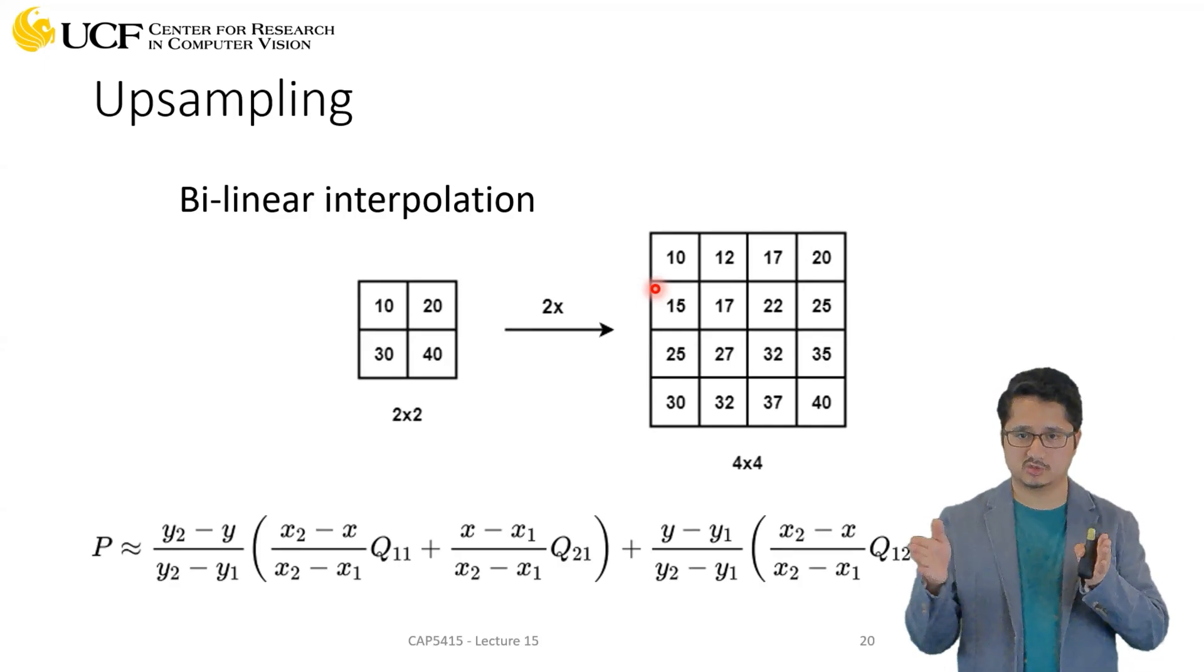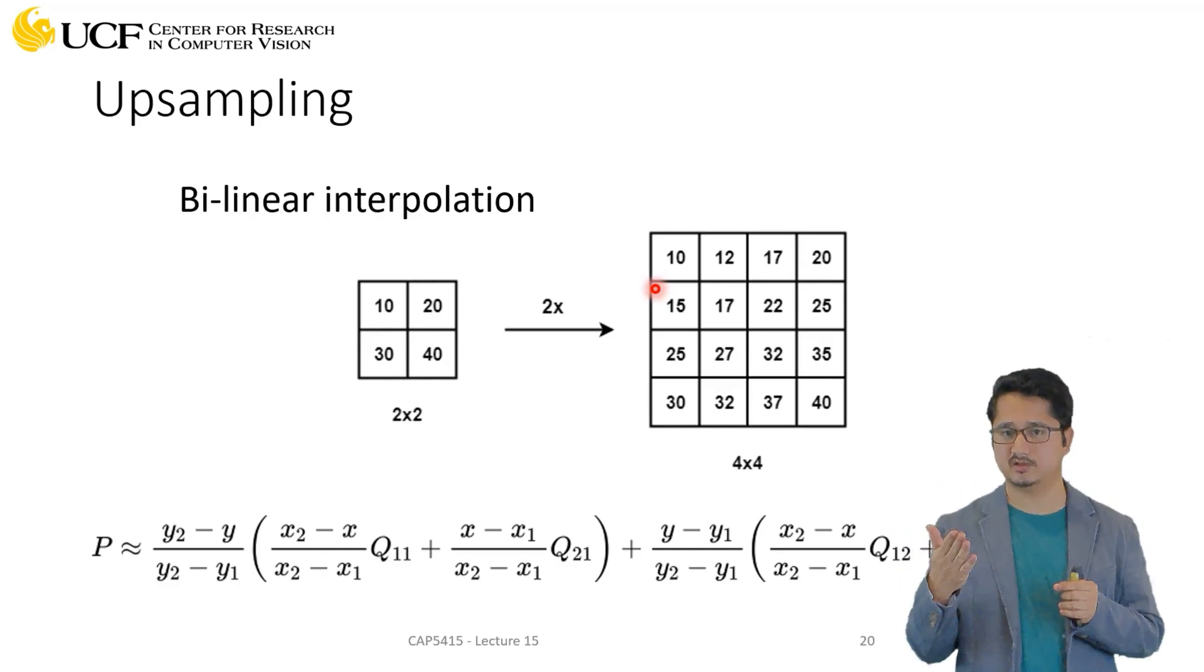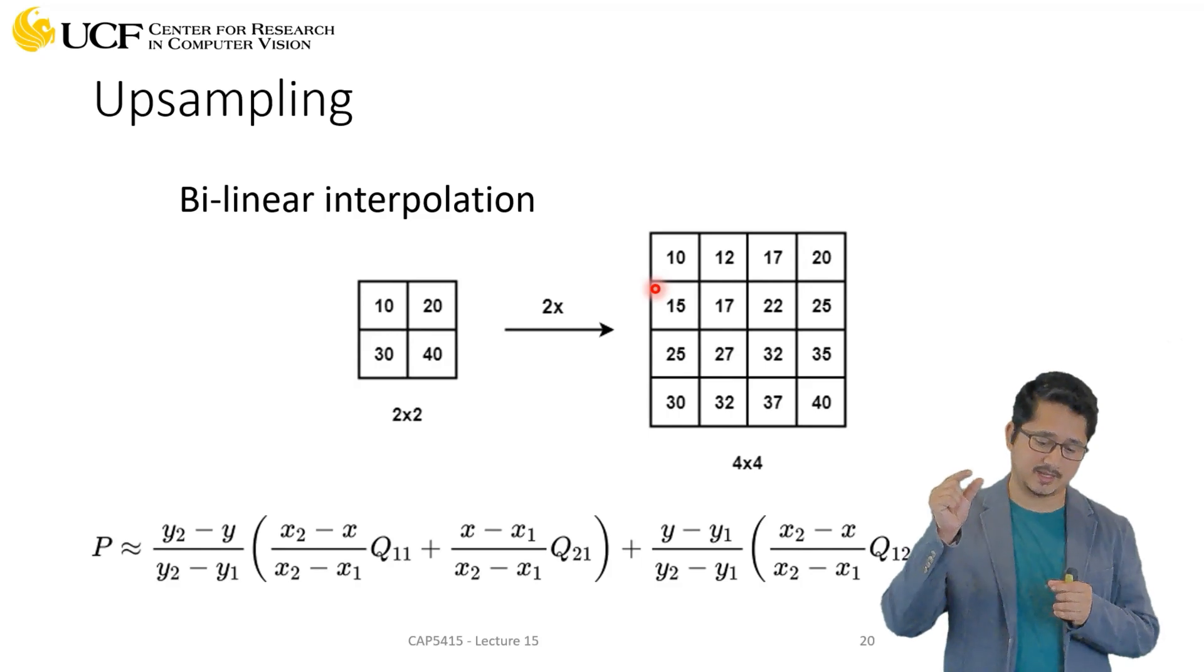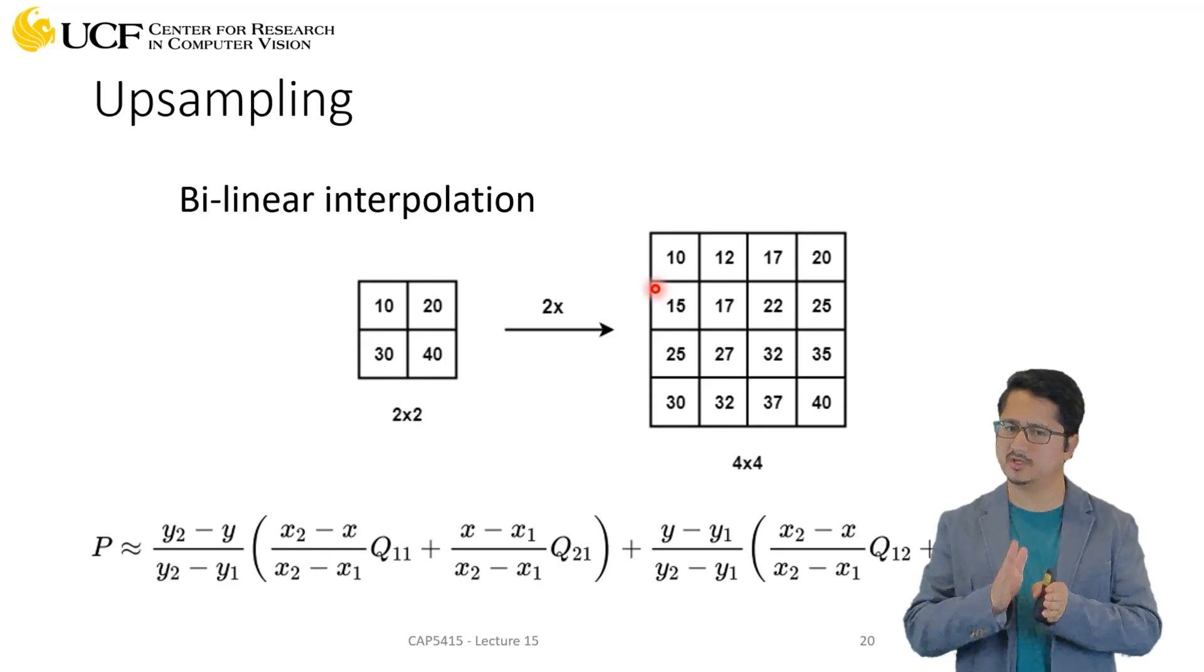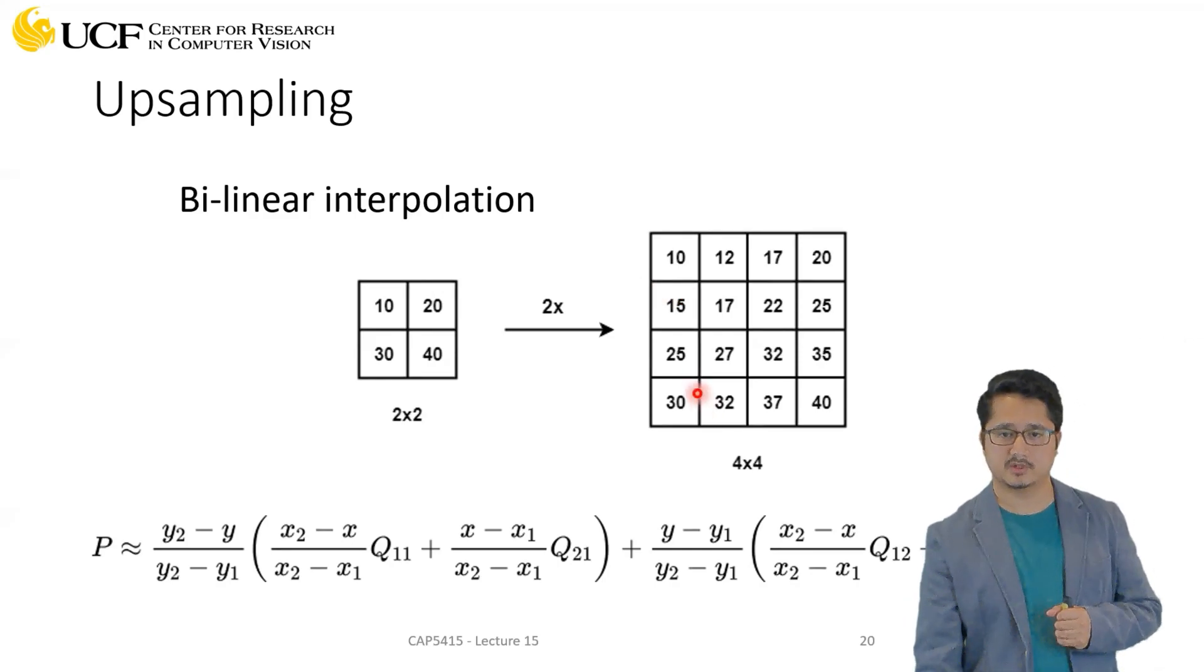The way you created those bins, each value goes to multiple bins depending upon where it lies in your orientation circle. That was weighted average considering the distance of that angle with the center of the bin. That was again bilinear interpolation, but in one dimension. In this case, the same thing is being done but it's in two dimensions.